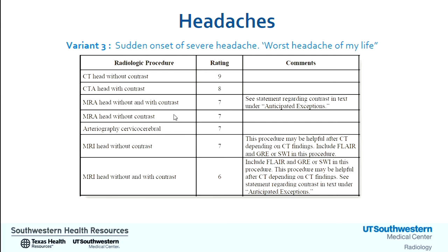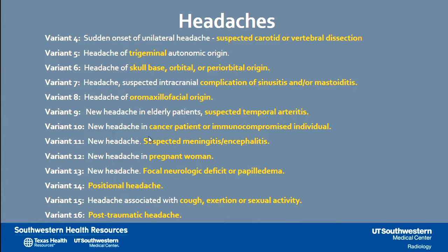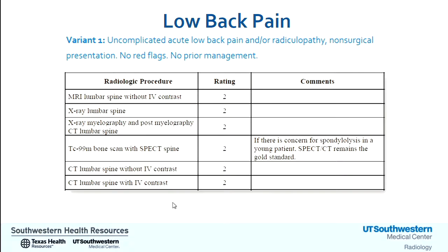If you have somebody with a thunderclap headache — worst headache of their life — you're usually thinking about subarachnoid hemorrhage. You want to get a non-contrast head CT and a CTA with contrast. You should probably send them to the ER, but if you're going to image them, those are the most appropriate studies. There's a full list of all the different headache variants available in the criteria, ranging from vertebral dissection to post-traumatic headaches. It's a nice resource.